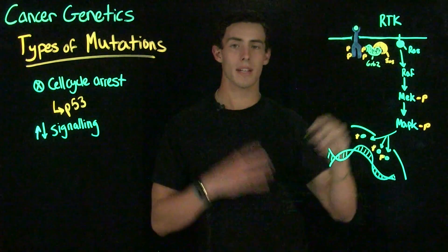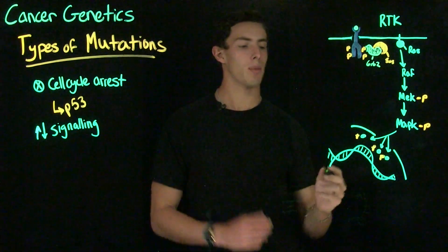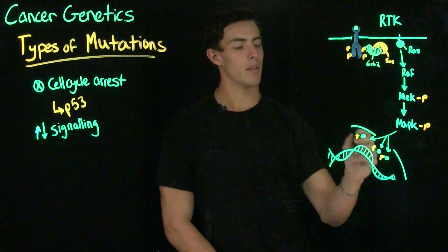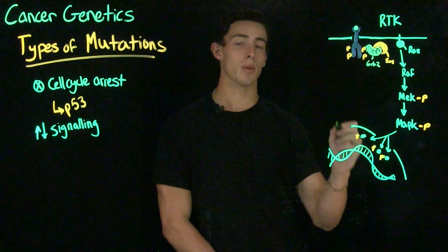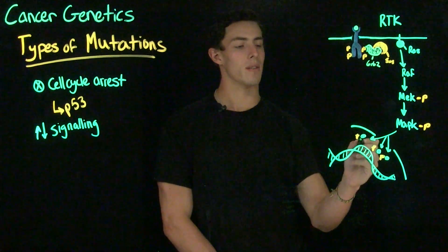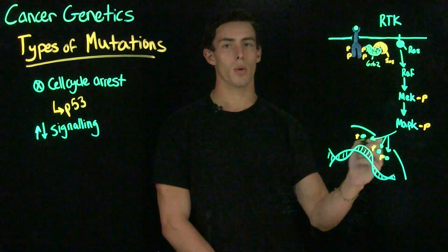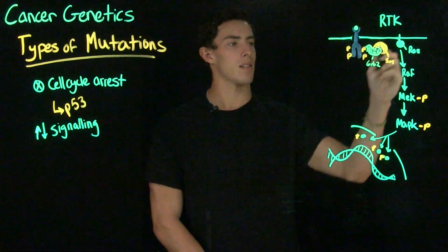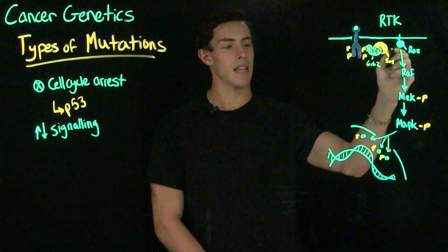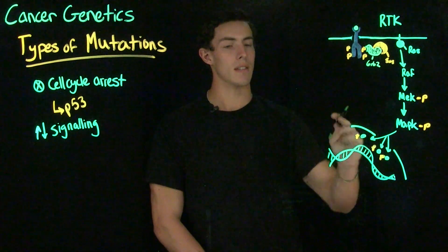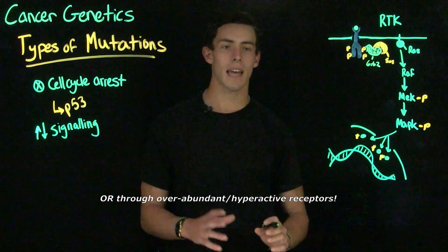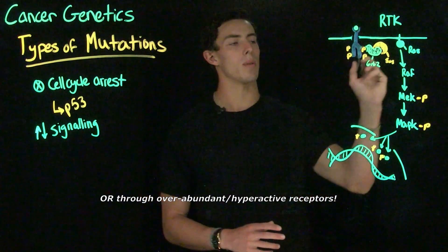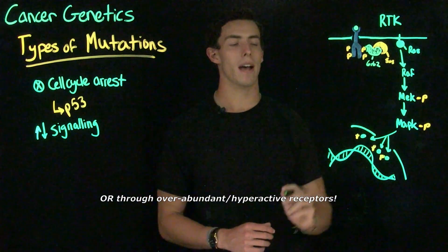As long as RAS is active, we're going to continue on this pathway and keep transcribing genes that produce proteins favoring cell growth and division. As long as RAS is active, these cells are going to divide — and thus a lot of cancers are due to a mutation of RAS.